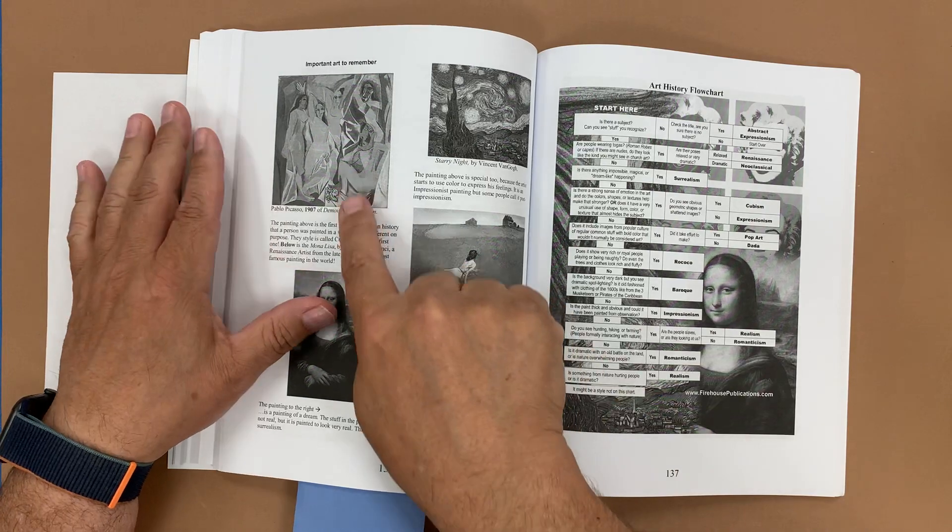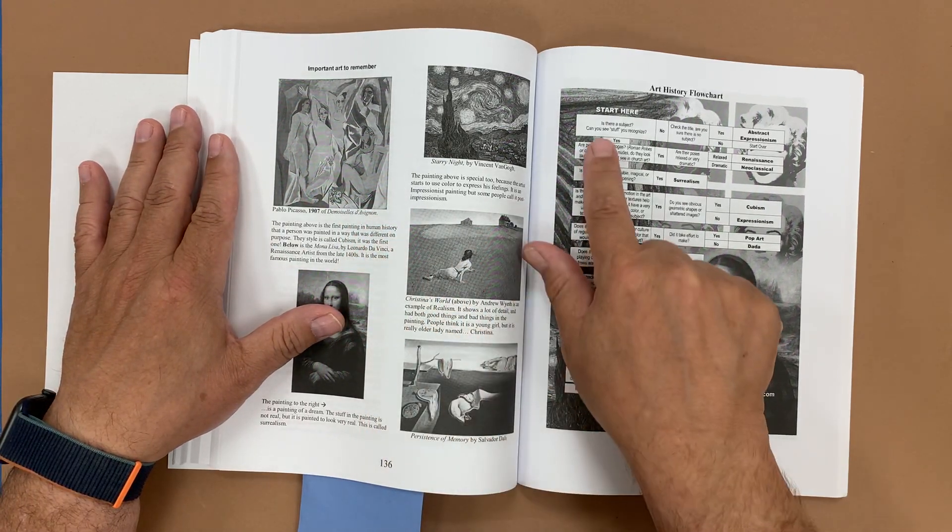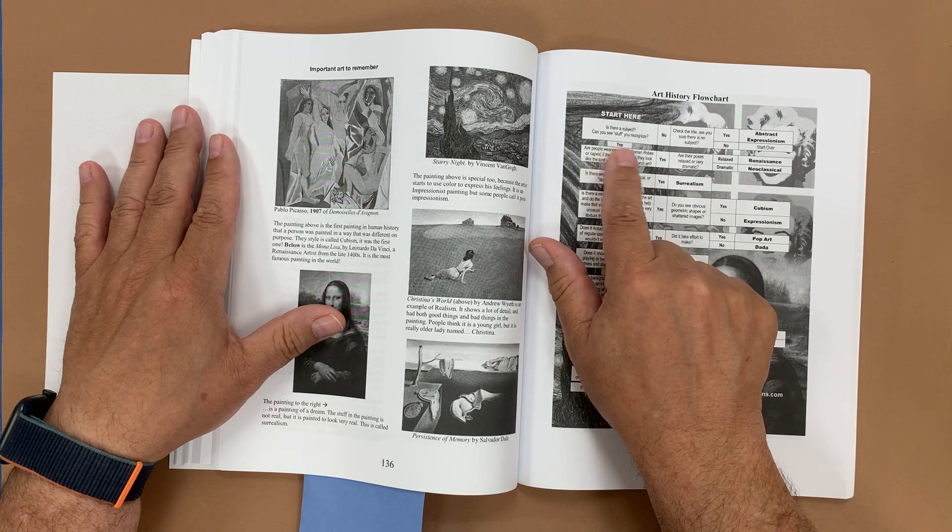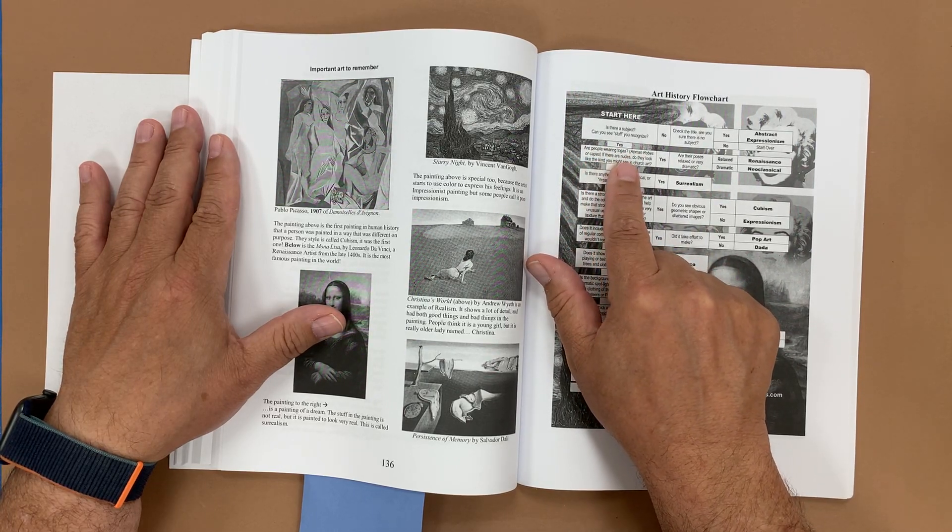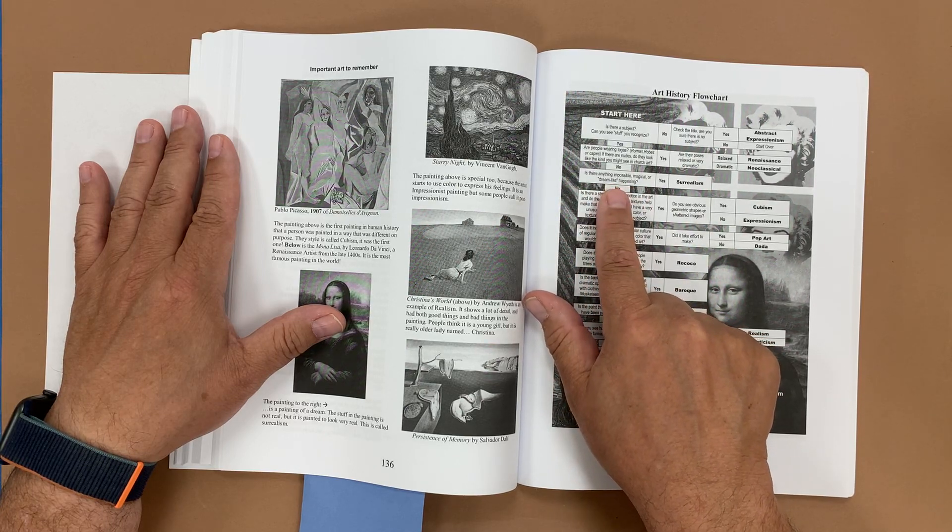So for example if we were going to do Les Demoiselles d'Avignon by Picasso, is there a subject, is there stuff you can recognize? Yes. Are the people wearing togas? No. Is there anything impossible or magical happening? No.